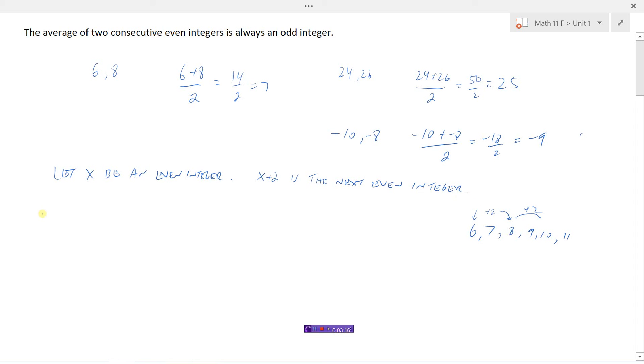And so then the average, what would the average be? That would be x, this one, plus the next one, which is x plus 2, those two numbers divided by 2. Well, if I go x plus x plus 2, x plus x would be 2x. So just simplifying my numerator, I have 2x plus 2, all divided by 2.